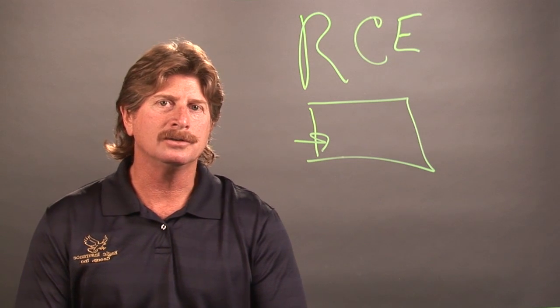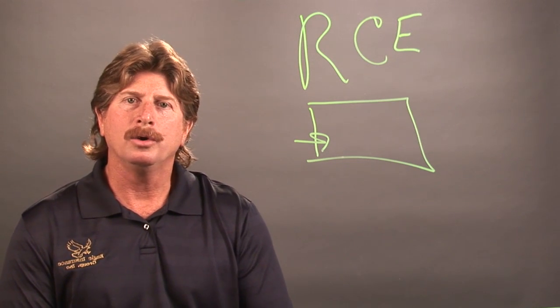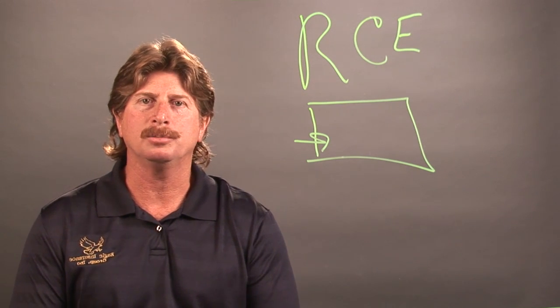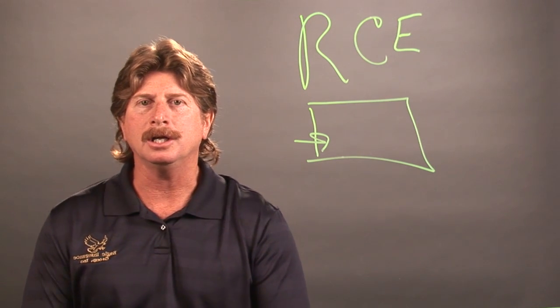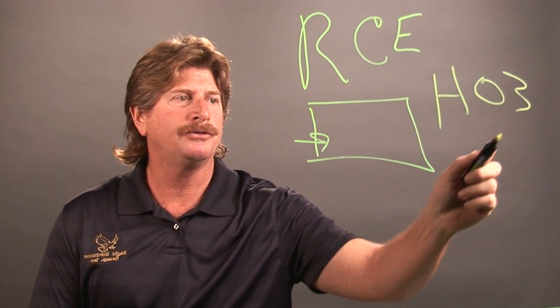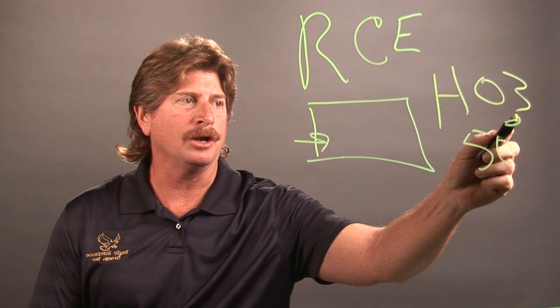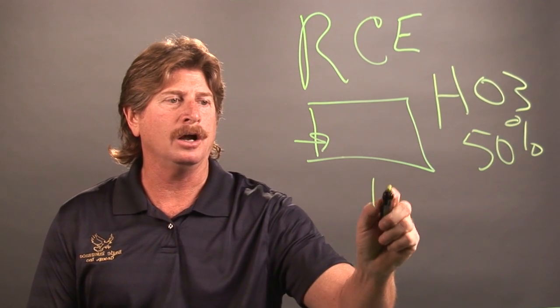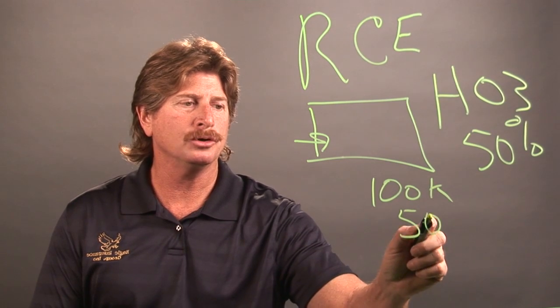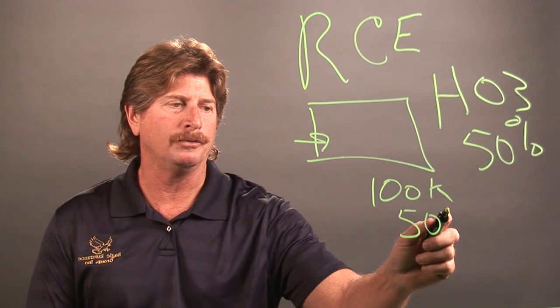As far as the contents, that's also another guideline where you determine how much you want your personal belongings to be insured for. Typically the guideline of an HO3 special forms policy is 50% of the value of the dwelling. So again, if you've got a $100,000 dwelling, then you would have your personal contents insured for $50,000.